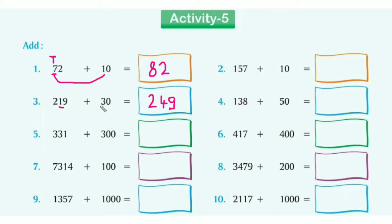See here: we need to add 300 to 331. In 331, the digit 3 is standing at the hundreds place. We keep the other digits the same and add hundreds only. So 300 plus 300 equals 600. Therefore the answer is 631.